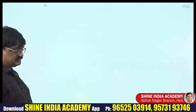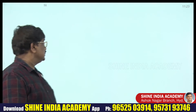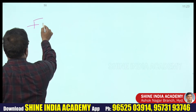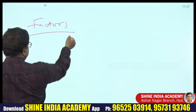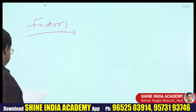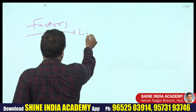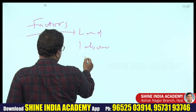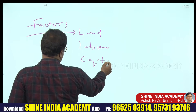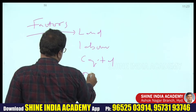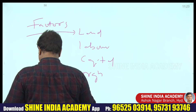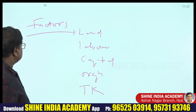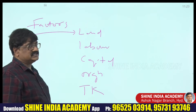Factors produce goods and services and are given some monetary value. The factors which can produce goods and services are: land, labor, capital, organization, and technical knowledge — five factors in total.